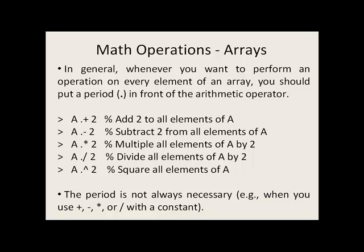In general, whenever you want to perform an operation on every single element of an array, you should put a period, or a dot, in front of the arithmetic operator.